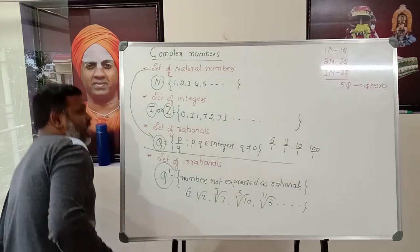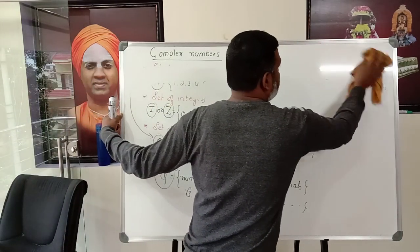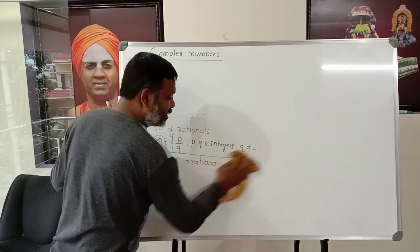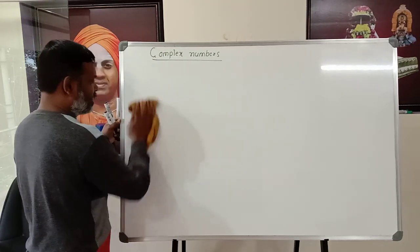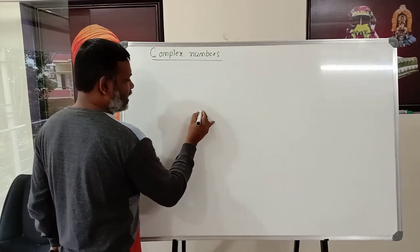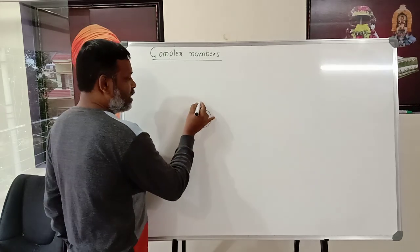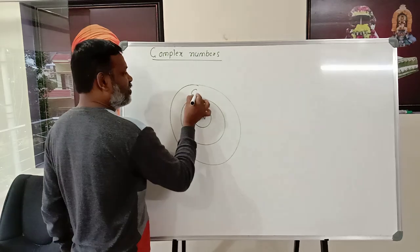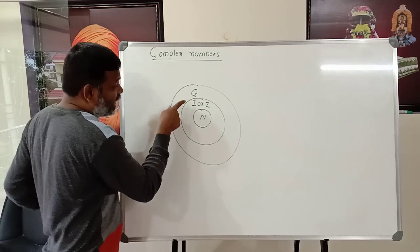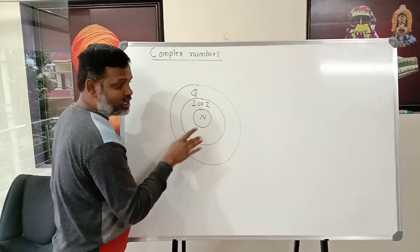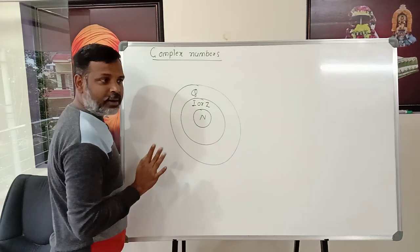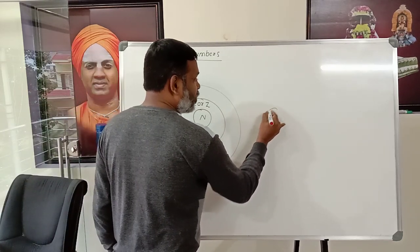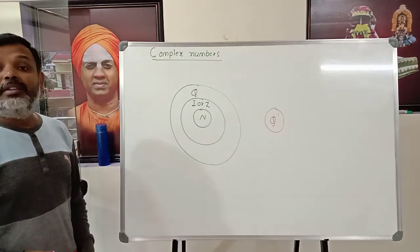Natural numbers originated first, used for counting. Then integers, denoted by Z. The next number system is the set of rationals Q, which contains both integers and natural numbers. Apart from these, there is Q′, the set of irrationals — numbers that cannot be expressed as p/q.